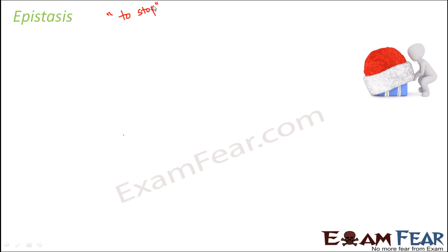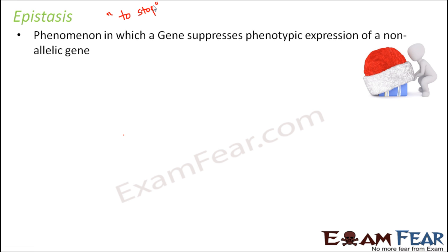Epistasis is a Greek word which means to stop. Epistasis is a phenomenon where one gene stops the phenotypic expression of another gene. It is the phenomenon in which a gene suppresses the phenotypic expression of a non-allelic gene. That means you have two different genes which are non-allelic — alleles located on different genes — and one of them suppresses or hides the phenotypic expression of the other. That phenomenon is what we call epistasis.